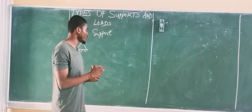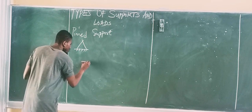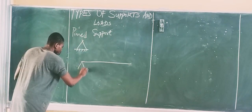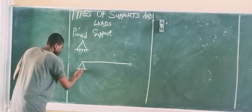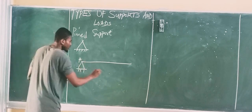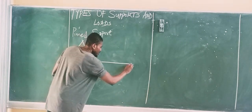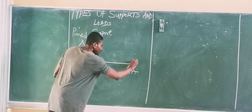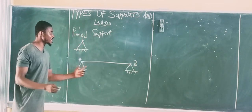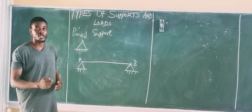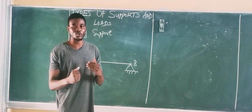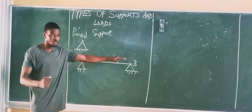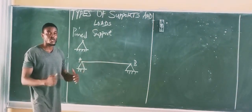So on the beam, let's say we have this beam, then we have this support at point A. This actually shows a Pinned Support used to provide assistance or support to the beam.